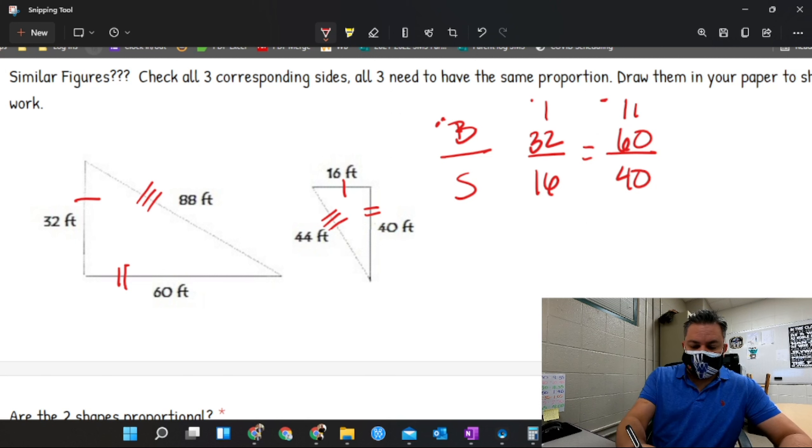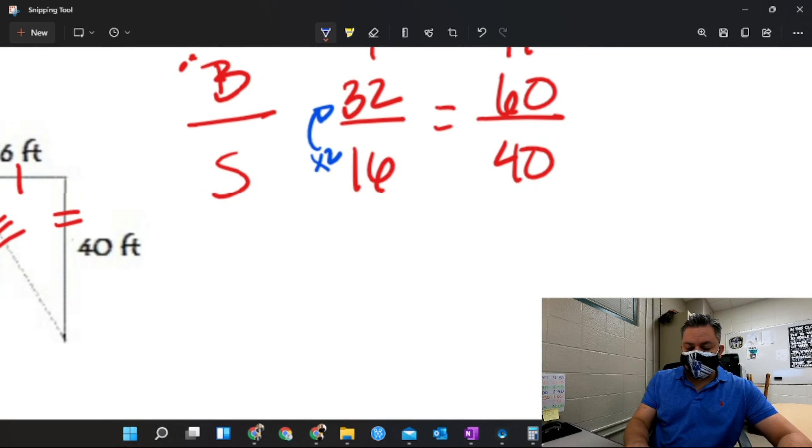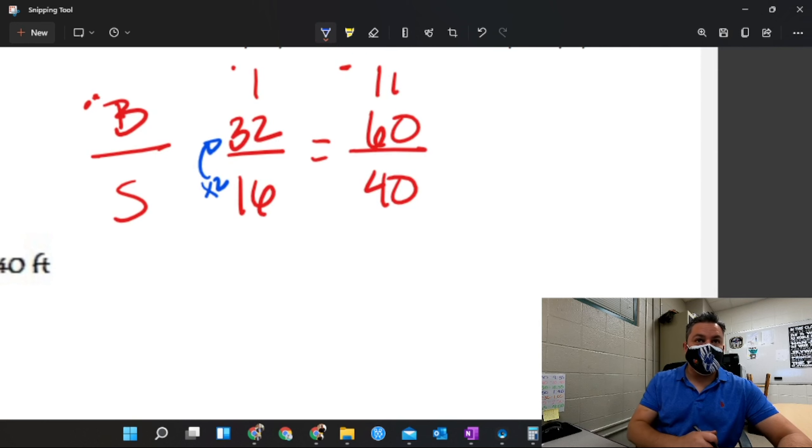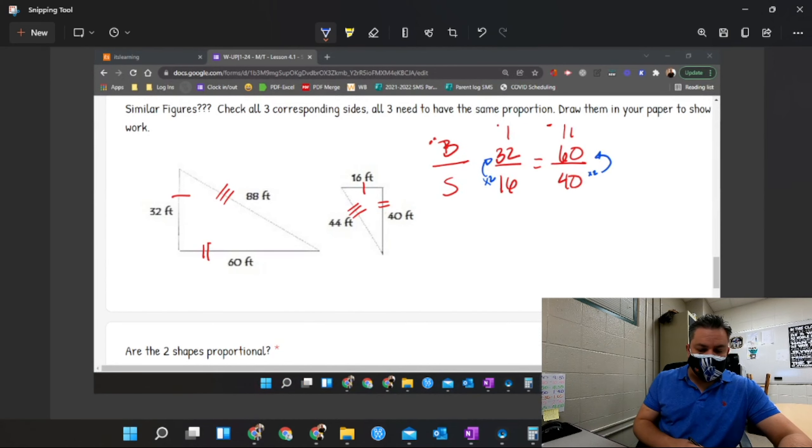It's very simple. If you multiply this times two, you get 32, right? So if you do something to one side, don't you have to do the same thing for the other one to be proportional? So if you multiply this times two, do you get 60? No. So are these shapes proportional? No.